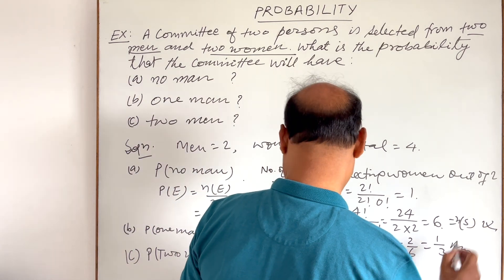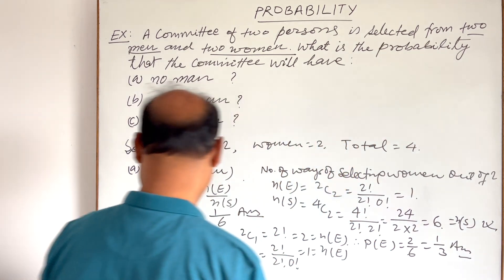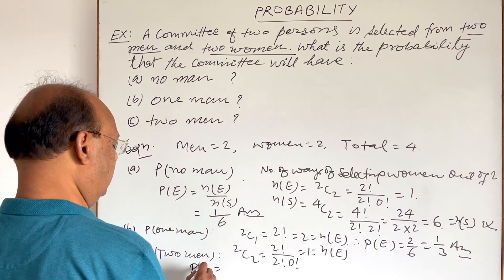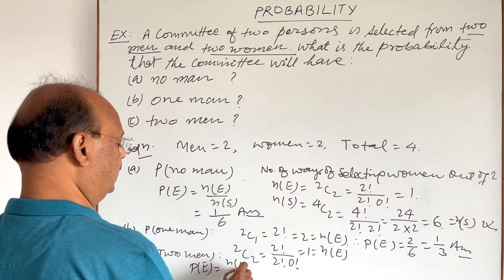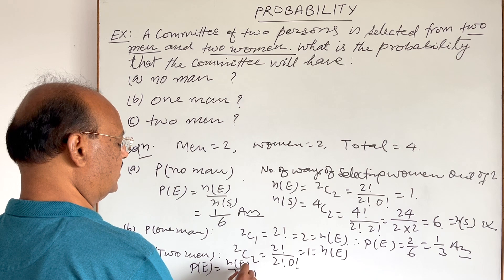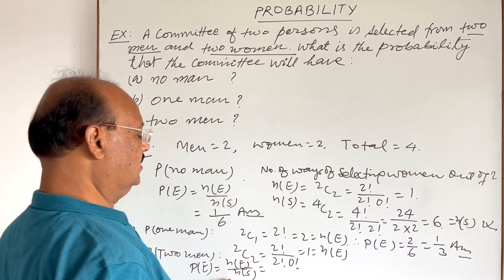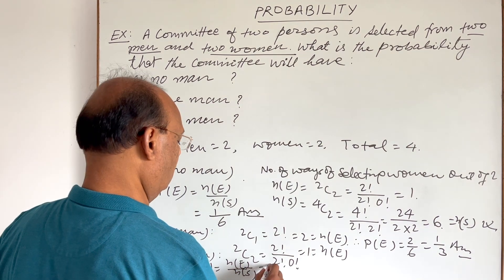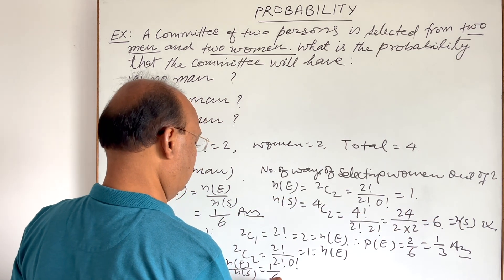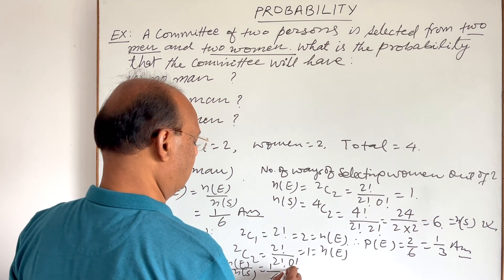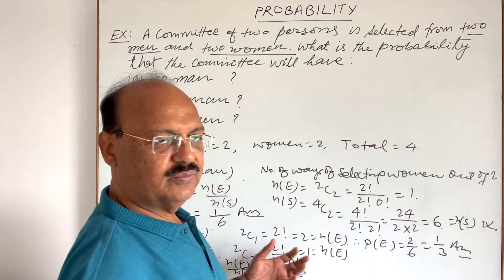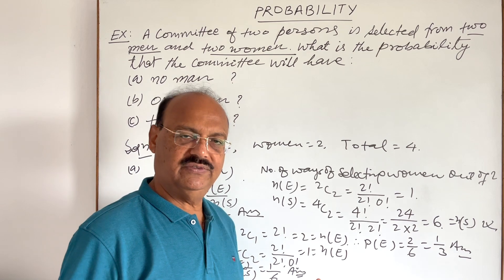N(S) remains 6. Therefore this probability P3 equals N(E) divided by N(S), where N(E) is 1 and N(S) is 6, so the answer of part C is 1/6. The question is straightforward — hope you have understood it very well. This question has been taken from NCERT of standard 11.